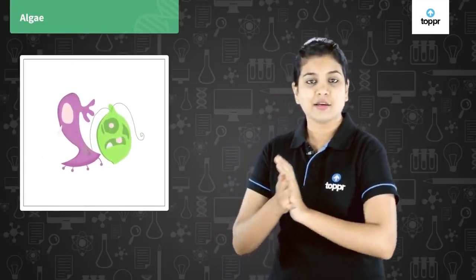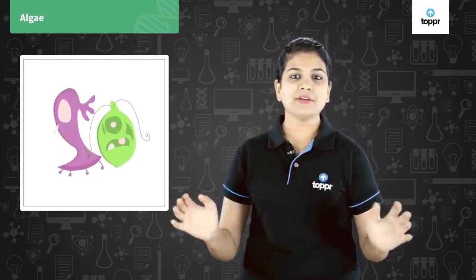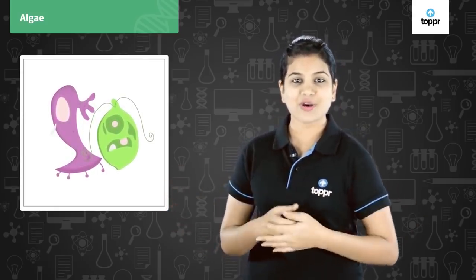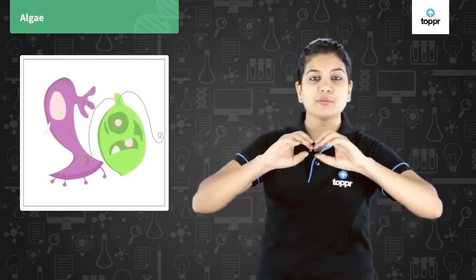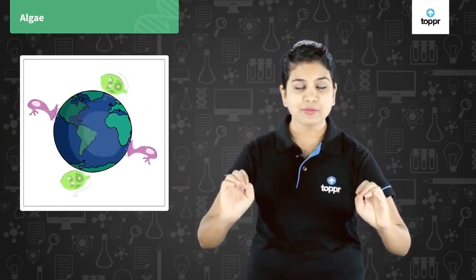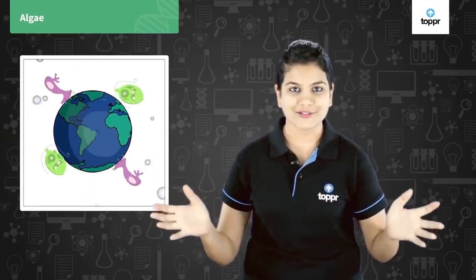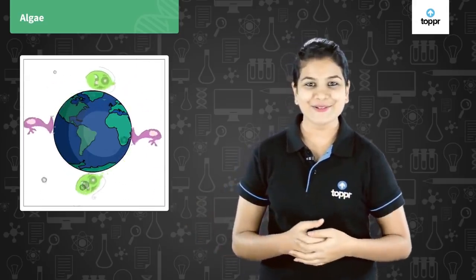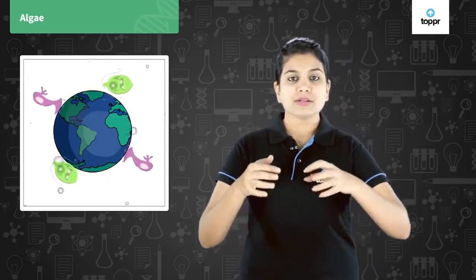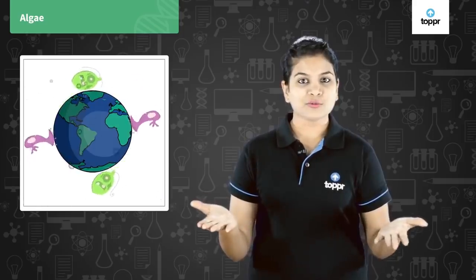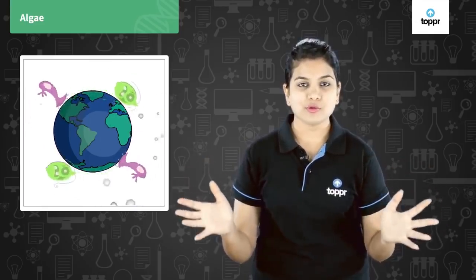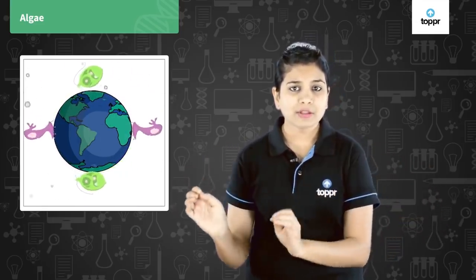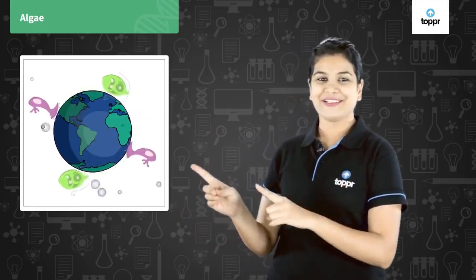The last type we are going to see is algae. Algae are amazing and very useful to us because they help in the production of almost 87 percent of the world's total oxygen. Even cooler — they are also found in snow! Algae can be found in any part of the world and have almost 27,000 species.